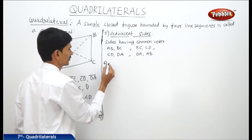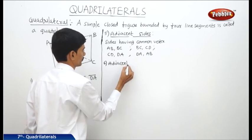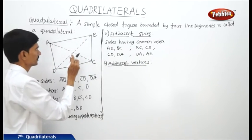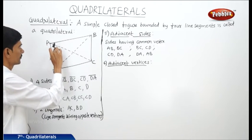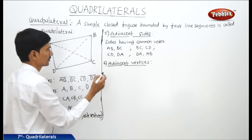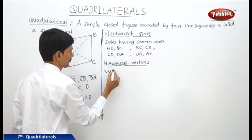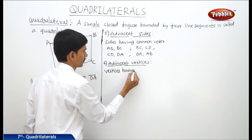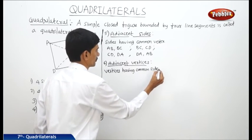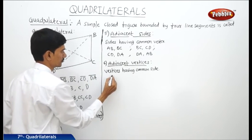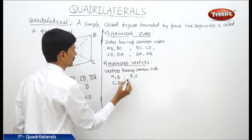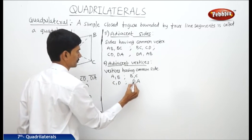Now the adjacent vertices. The adjacent vertices means the two vertices which have a common side. So the adjacent vertices are A and B, B and C, C and D, and D and A.